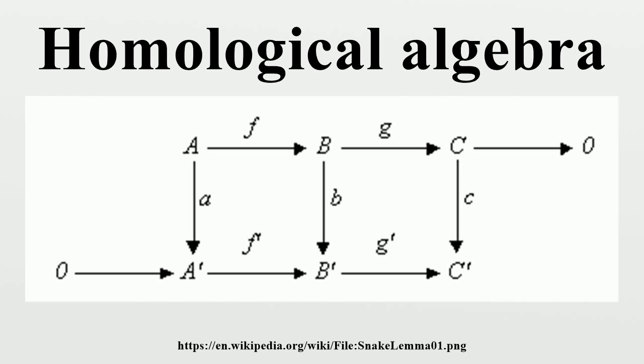A chain complex is called acyclic or an exact sequence if all its homology groups are zero. Chain complexes arise in abundance in algebra and algebraic topology.